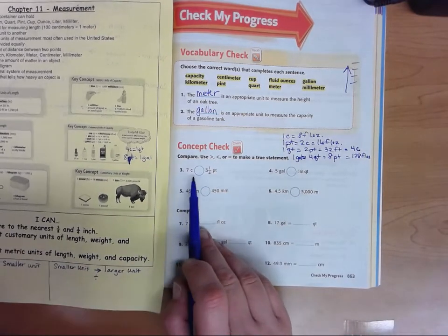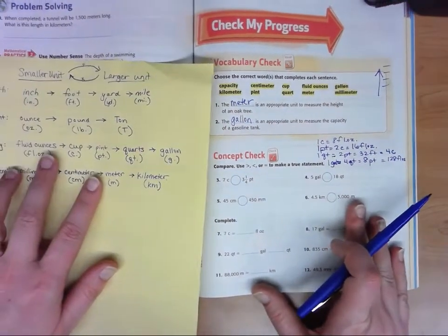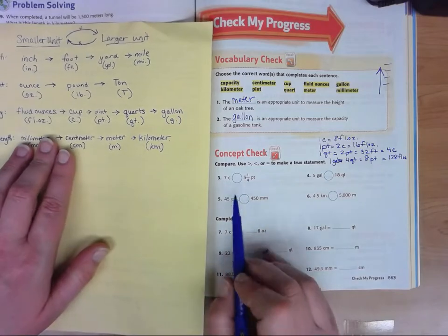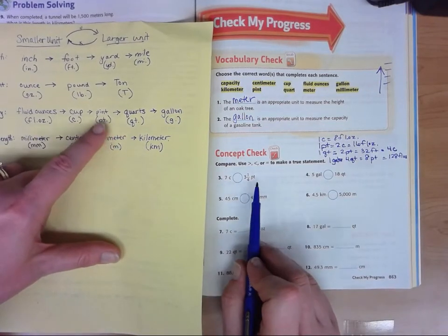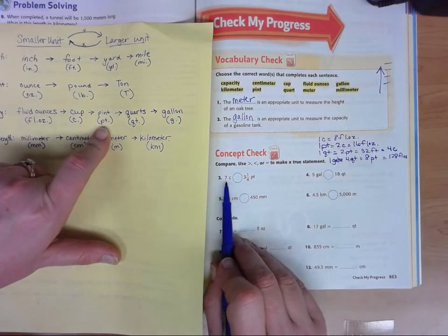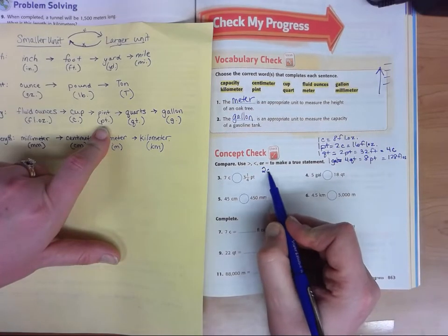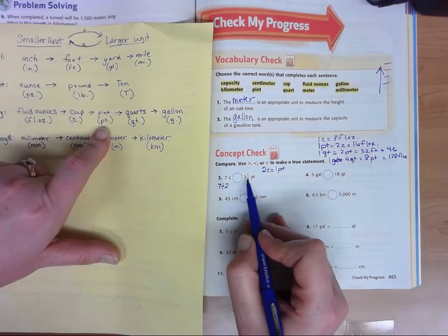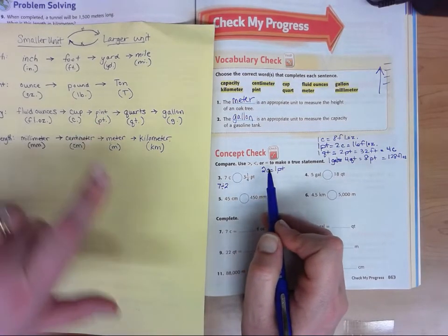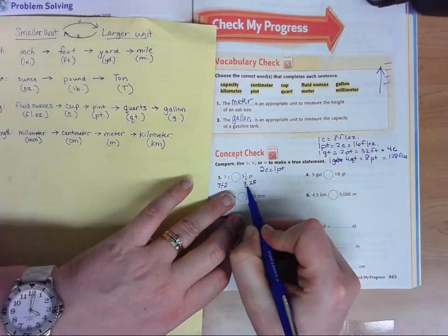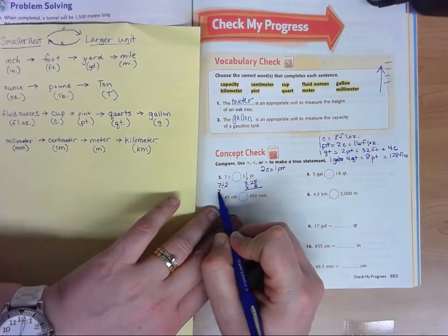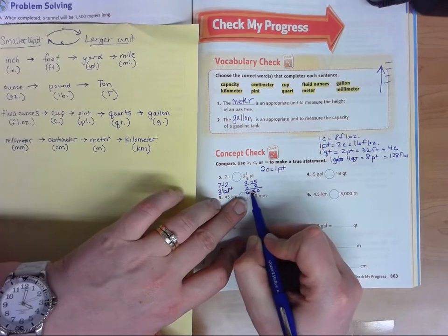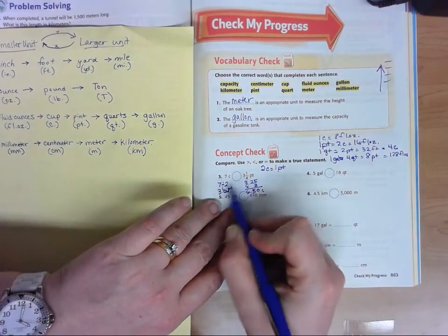We have some comparisons here. What's bigger, seven cups or three and a quarter pints? You'll want your yellow sheet out to help with this. When we talked about capacities, I always like to go from larger units to smaller so I can multiply. In this case, what's larger, a cup or a pint? The pint is larger. So we would go from pints to cups. We know that there's two cups in one pint. If we did three and a quarter, that's 3.25 times two, we get six and a half cups. So either way, that's larger.